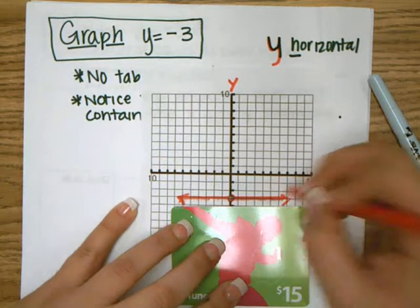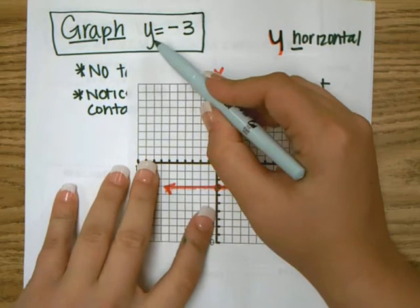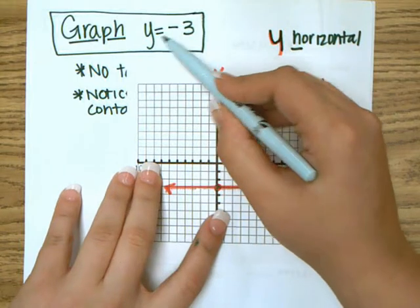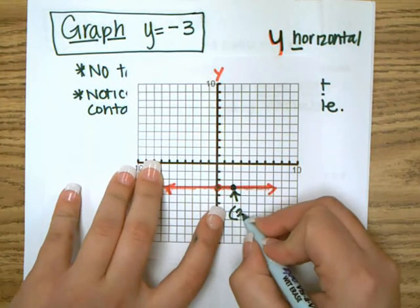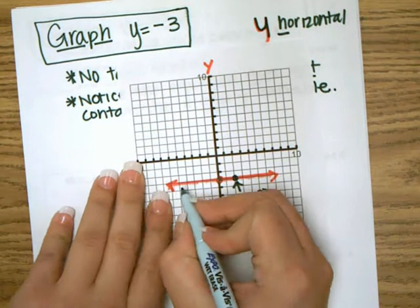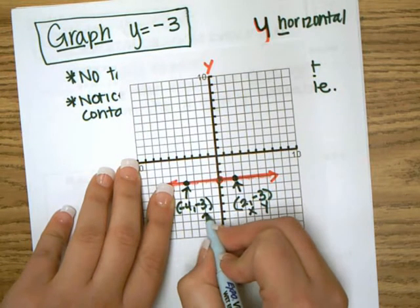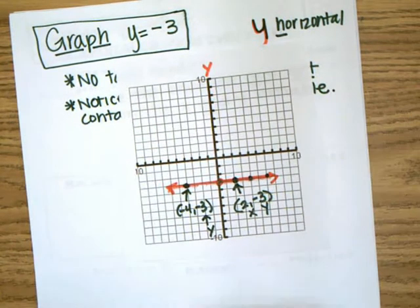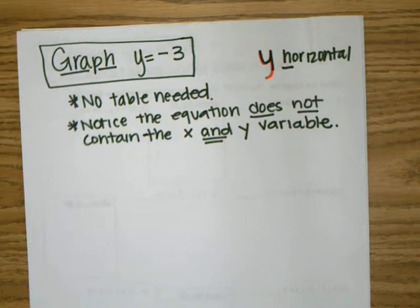That helps me remember that this will make a horizontal line. So we're going to go to negative three and it will make a horizontal line. The mathematical reason why it's horizontal is this is saying: graph such that all the y values, all the solutions, all the points have a y value of negative three. For example, this point on that horizontal line is at (2, -3) — the y value is negative three. If we go over here, that point is at (-4, -3) — again, the y value is negative three. Every point on this line has a y value of negative three.